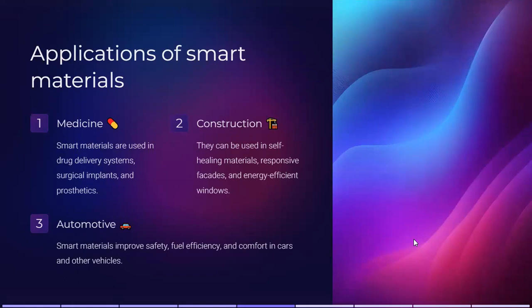The applications of smart materials include medicine, construction, and automotive. In medicine, smart materials are used in drug delivery systems, surgical implants, and prosthetics. In construction, they can be used in self-healing materials, responsive facades, and energy-efficient windows.